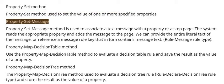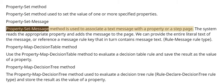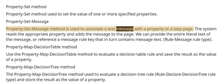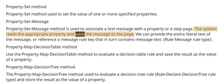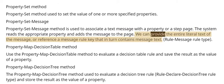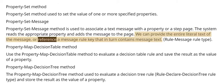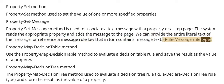Property Set Message Method is used to associate a text message with a property or a step page. The system reads the appropriate property and adds the message to the page. We can provide the entire literal text of the message, or reference a message rule key that in turn contains message text, using the Message Rule type.